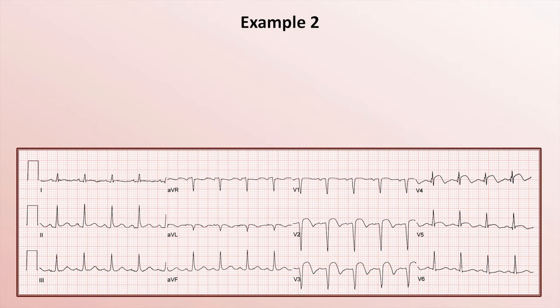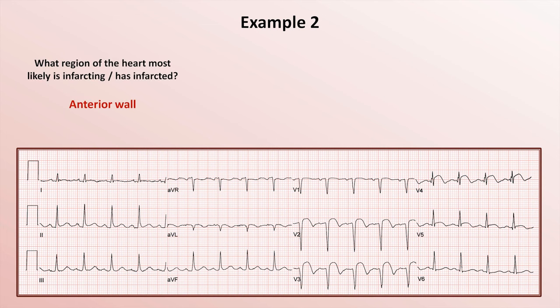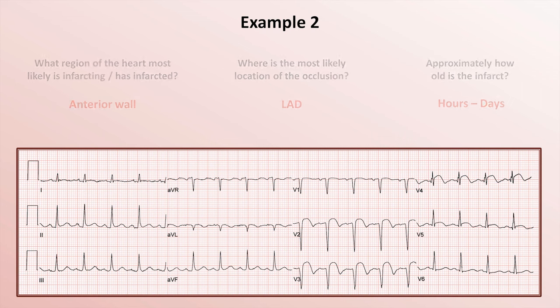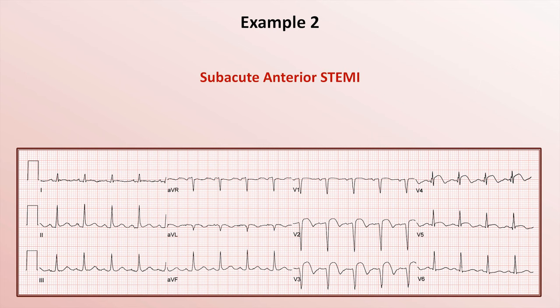In example 2, ST elevations are seen in V2 through V5, so the region that appears to have infarcted is the anterior wall, supplied by the LAD. Although many trainees assume that ST elevations suggest the MI is very acute, there are also pathologic Q-waves in V2 and V3. Since Q-waves take hours to days to develop, this infarct must be that old — ST elevations and Q-waves can co-exist during this window. Summary: this EKG shows a subacute anterior MI.